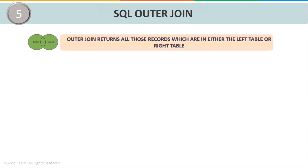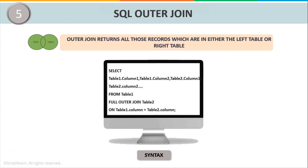Next, let us discuss SQL Outer Join. SQL Outer Join, also called SQL Full Join or Full Outer Join, is used to get all the rows present in both tables. It returns all records present in either the left table (Table 1) or the right table (Table 2), even if there are no matching records in both tables. The syntax is: SELECT table1.column1, table1.column2, and so on FROM table1 FULL OUTER JOIN table2 ON table1.column = table2.column. You must mention the same or similar column name after the ON predicate statement.